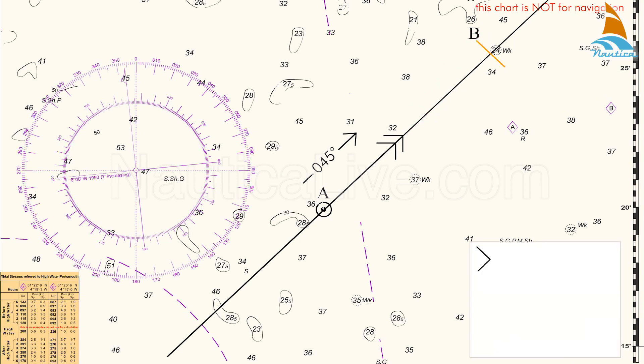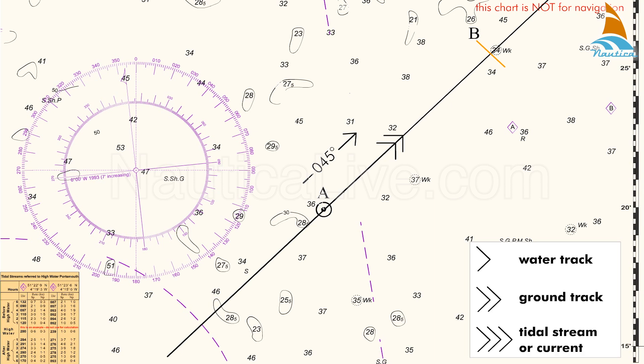We use one arrowhead for the indication of a water track, two arrowheads for a ground track, and three arrowheads for the tidal stream or current.